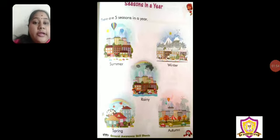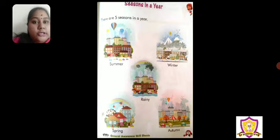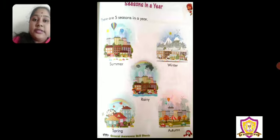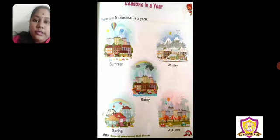What are they? Summer, winter, rainy, spring, and autumn. You will already have an idea about summer, winter, and rainy season. So today what we are going to learn are the next two seasons: spring and autumn.